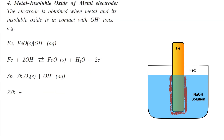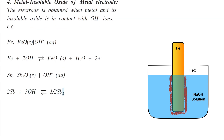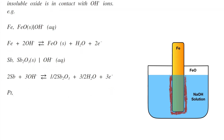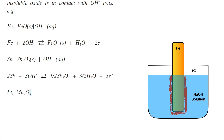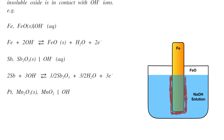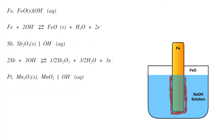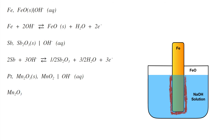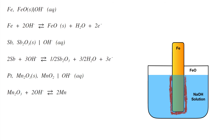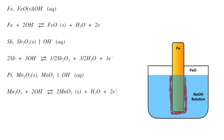For antimony: 2Sb + 3OH⁻ → ½Sb₂O₃ + 3/2 H₂O + 3e⁻. Manganese oxide and manganese dioxide can make a similar electrode, represented as Pt | MnO | MnO₂ | OH⁻(aq). The oxidation reaction is: MnO + 2OH⁻ → 2MnO₂ + H₂O + 2e⁻.